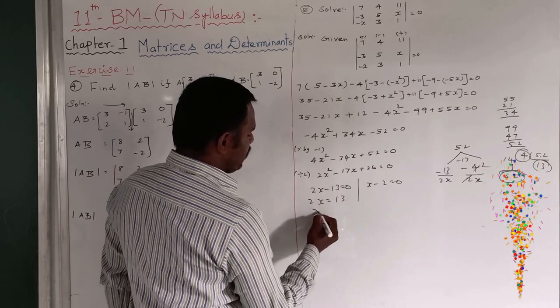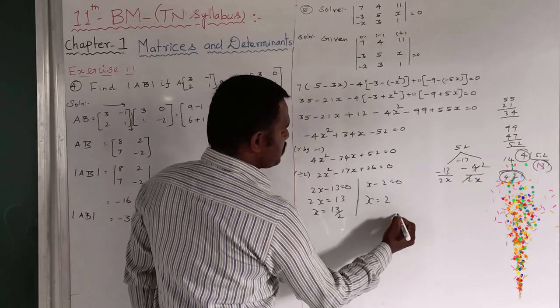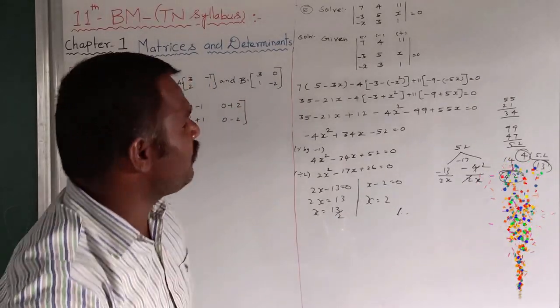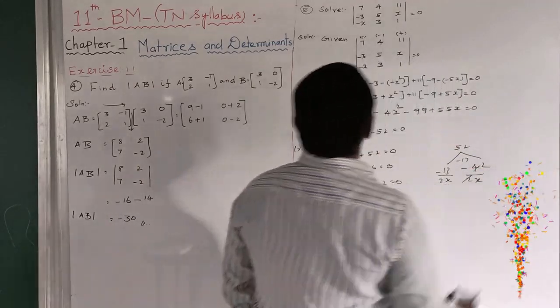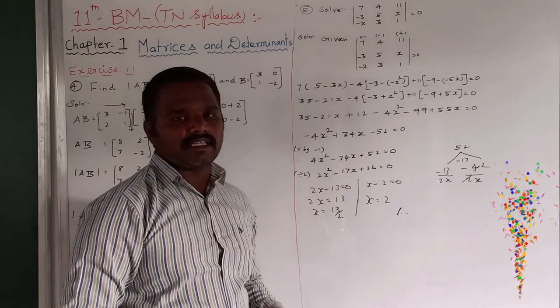2X equal to 13. X is equal to 13 by 2. X is equal to 2. This is both answers for the value of the determinant. 7, 4, 11 minus 3, 5X. X minus X3, 1.